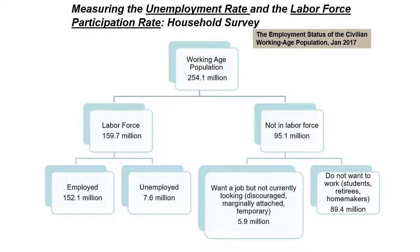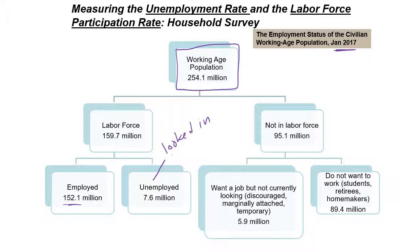Looking at January 2017 data, our working-age population was 254 million — not including soldiers, the institutionalized population, or children below 16. Of those, almost 160 million were in the labor force, with 152 million employed and the remainder unemployed. Remember the key: to be counted as unemployed, a person must have looked for a job in the last four weeks.